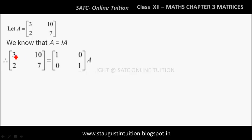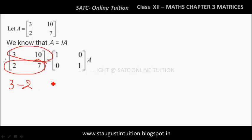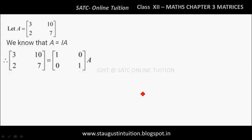Now, this is 1. If we do this operation, we can proceed. 3 is 2 and another 1, that is 3 minus 2 equals 1. This is Row 1 and this is Row 2. Row 1 will change to Row 1 minus Row 2. This is the operation — this is how to apply it. Row 1 gives Row 1 minus Row 2.